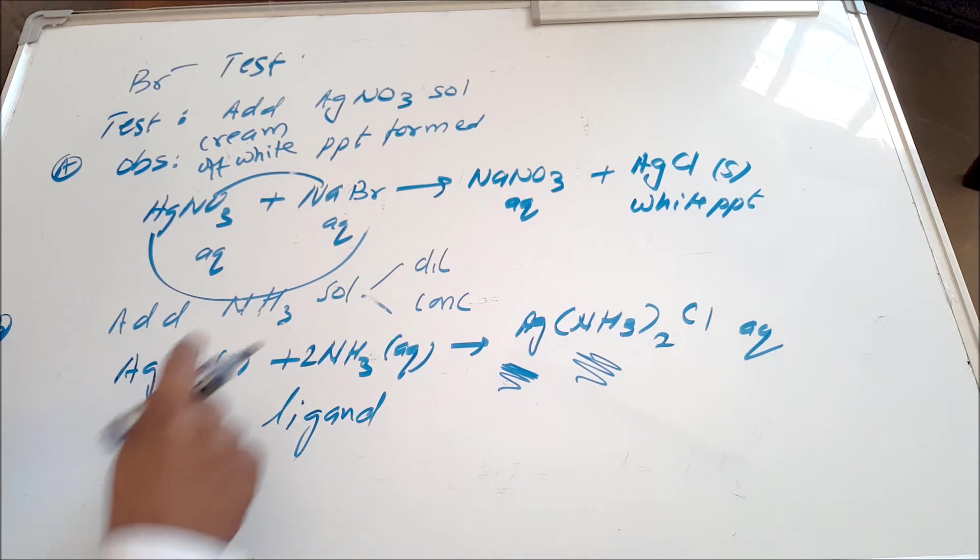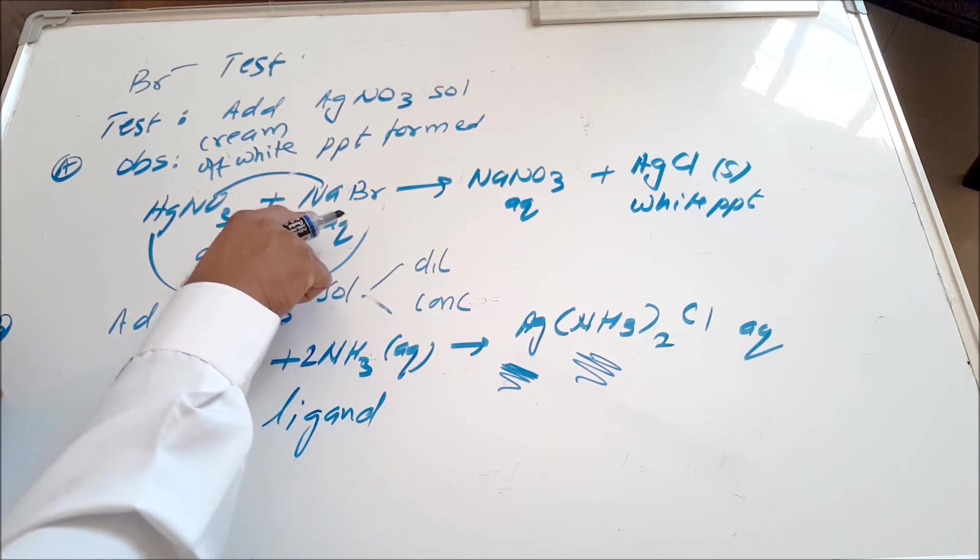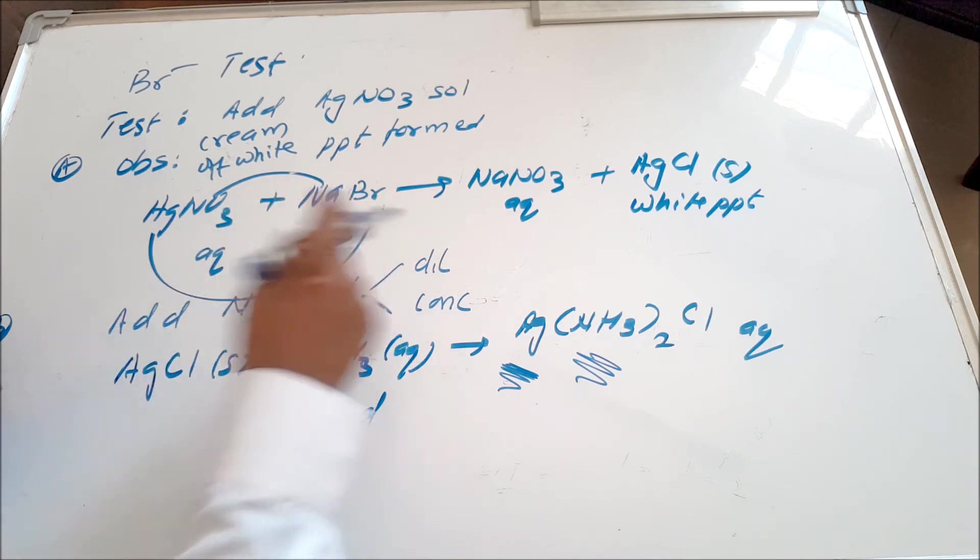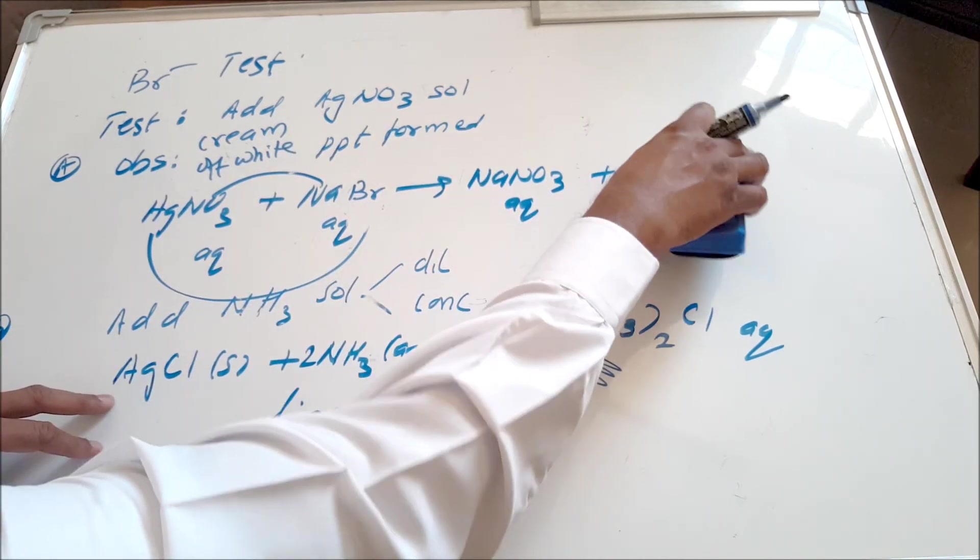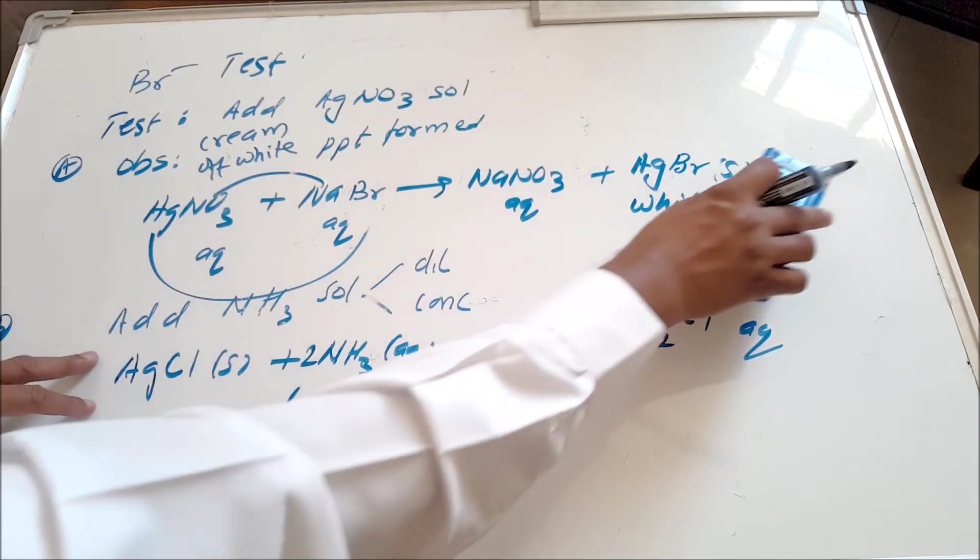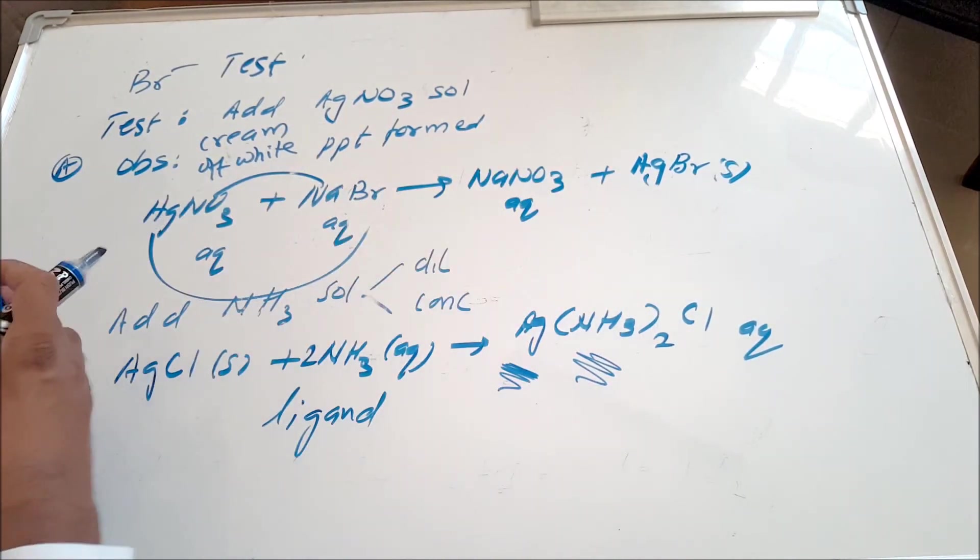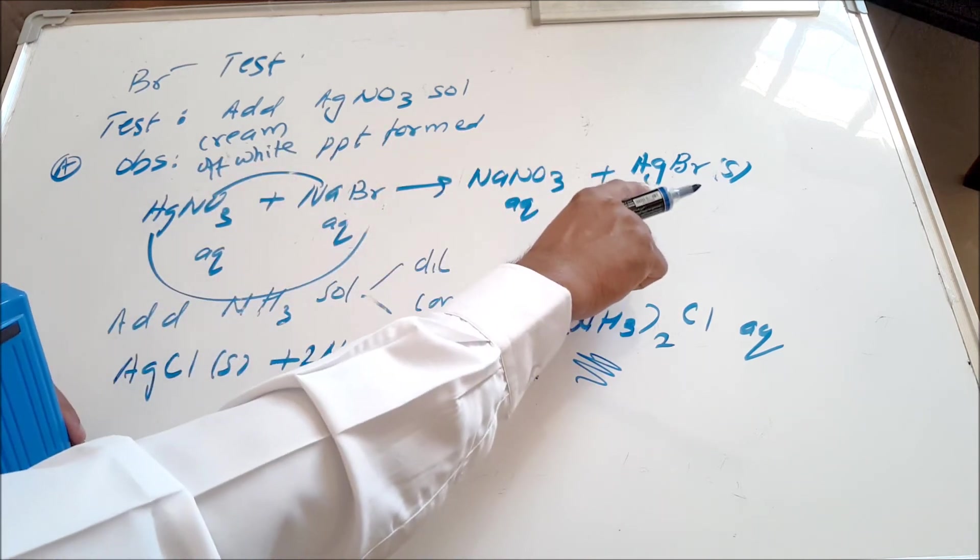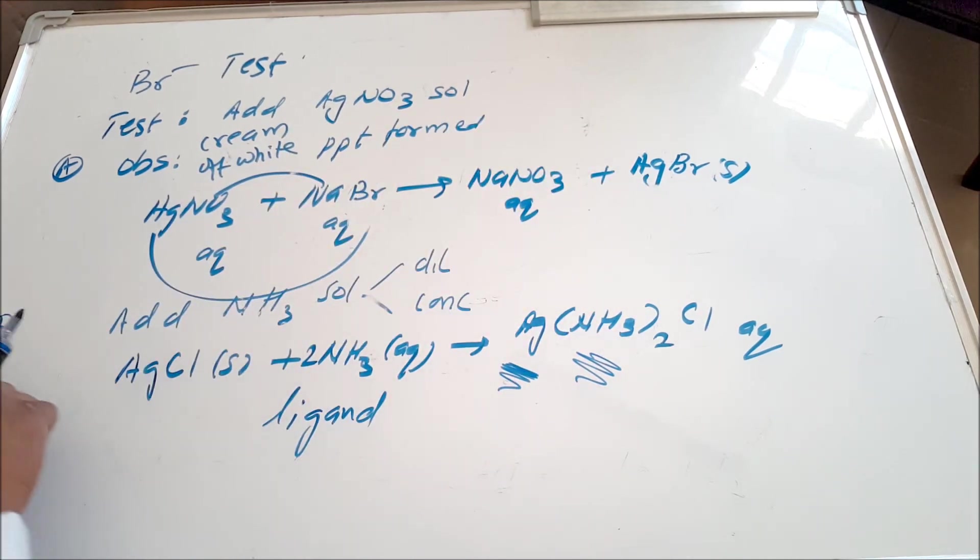I have sodium bromide. I can use potassium bromide, I can use HBr, I can use anything which gives me the bromide. And here instead of AgCl, I end up getting AgBr. Obviously that's not the white precipitate, that's the cream or off-white precipitate which I get.